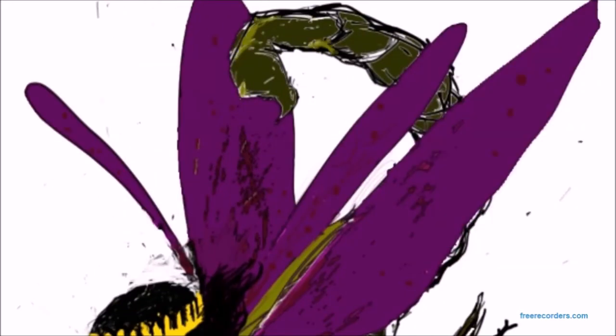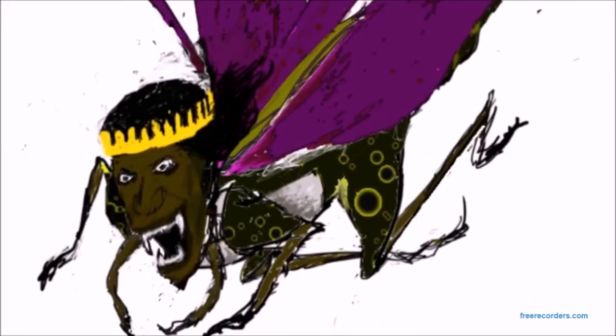They've got the tail of a scorpion and I bet this thing is going to be really stinging. It says people would desire to die but death will flee from them. And they have this form of a locust.